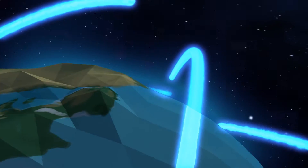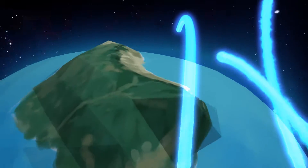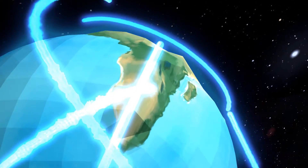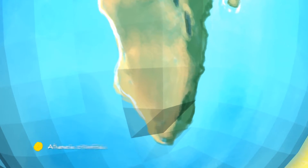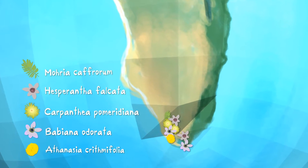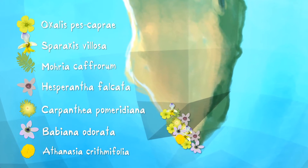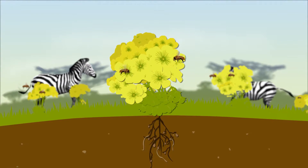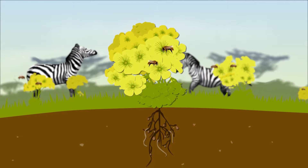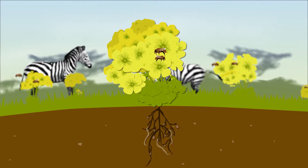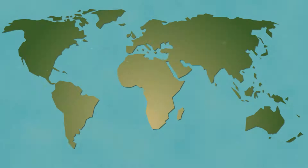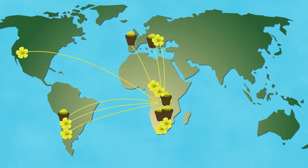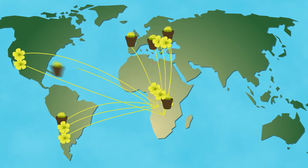There is a huge diversity of species on the planet. But most of them are restricted to certain geographical regions of the Earth, where they are in equilibrium with other species of the region. But as a result of human activities, many of them are transferred far from their native areas.